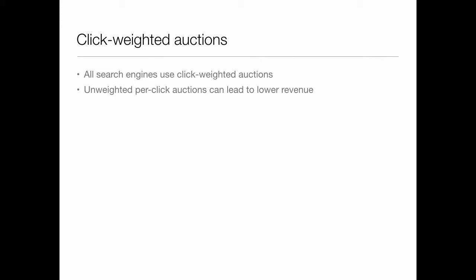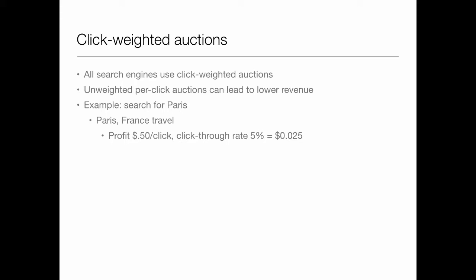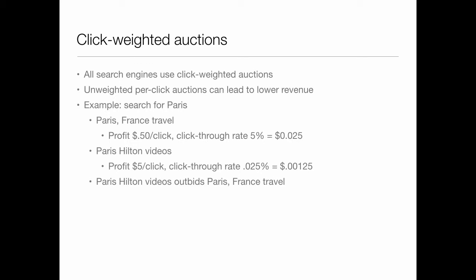You'll notice that Halverian talked about click-weighted auctions. All search engines use click-weighted auctions to some degree. Unweighted click auctions lead to lower revenue. For example, imagine you had a search for Paris. You might be looking for Paris, France travel — profit is 50 cents a click, click-through rate is 5%. But you might be searching for Paris Hilton, where profit is maybe higher but click-through rate is lower because those aren't people searching for travel. So Paris Hilton ads would outbid Paris, France travel, but the Paris Hilton ad generates half the revenue for the search engine. You want to weight those things — just because somebody's put in a high bid doesn't mean you should give them priority without considering the likelihood of someone clicking.